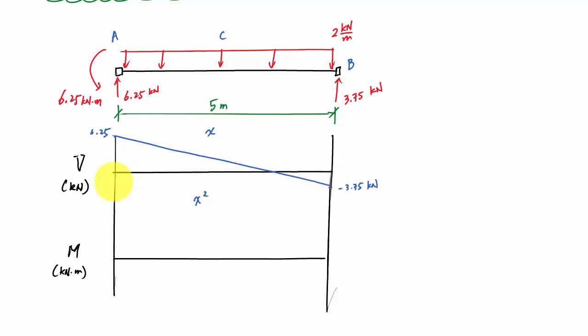And this distance here, for my moment diagram, this distance here to where the shear is zero. If you're not sure, well, one way to do this is, you know that the change here is 6.25. So that means the area at which this distributed load is 6.25. And so this would just be decreasing at a rate of 2 kilonewtons per meter. So this distance is 6.25 divided by 2, which is 3.125 meters.